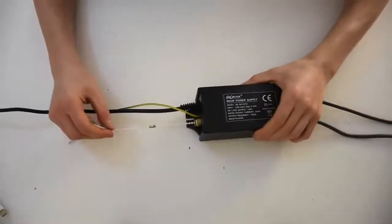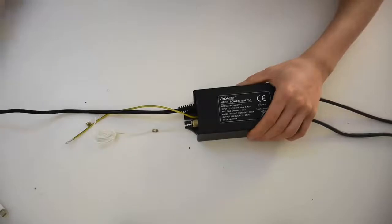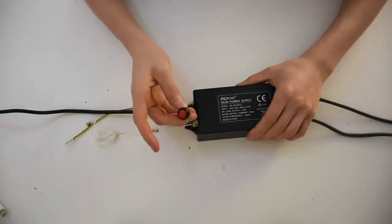The first step is to replace this pull switch with a red momentary button. To do so we need to take apart the casing.